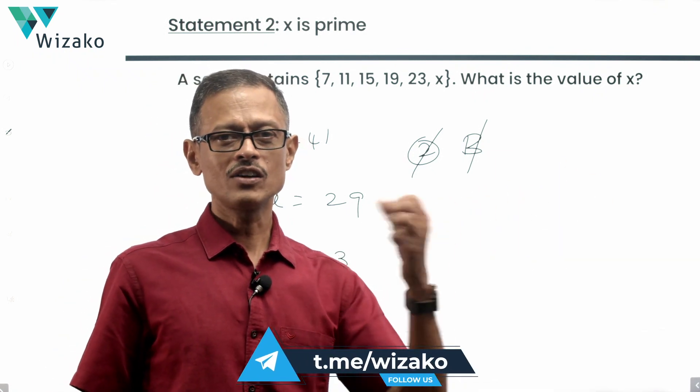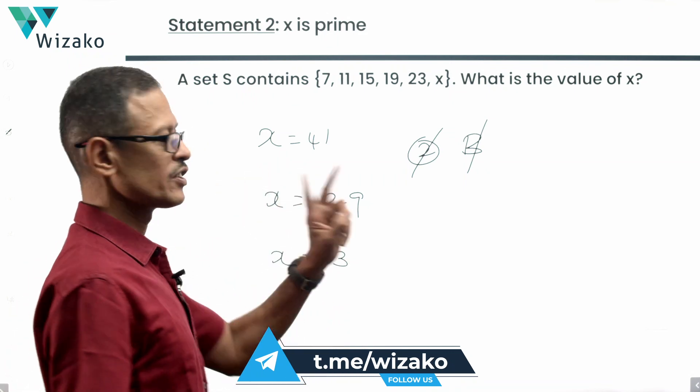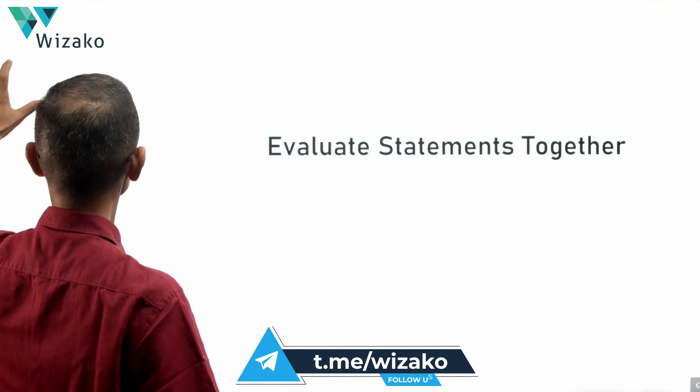So A, D with statement one gone. B with statement two gone. They're left with two more choices, C or E. Let's combine and see whether it makes sense.